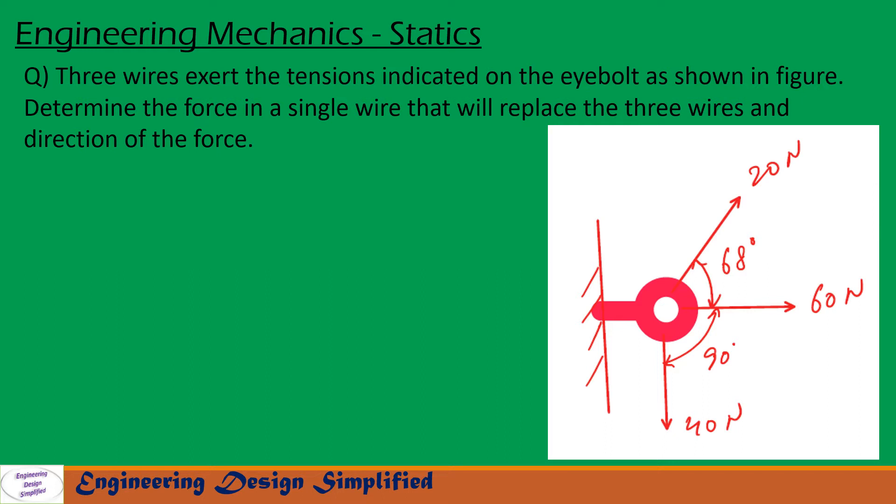So here in this picture on this eyebolt three forces are acting as shown. This force 20 Newton at an angle 68 degrees with the horizontal, and this 60 Newton is horizontal, and this 40 Newton is vertically downwards, that is 90 degrees from the horizontal. So in this problem we need to find a resultant force that should replace all these three forces and its direction.